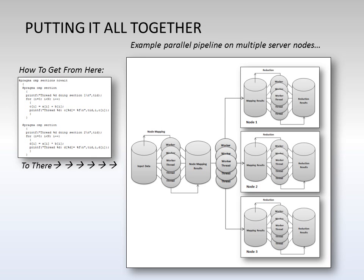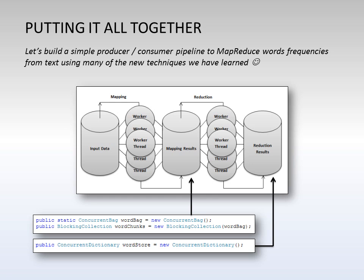One of the challenges with some of the lower level libraries is how to get from a simple example like dividing work between two loops in OpenMP to something like a giant pipeline process that has MapReduce spread across three different servers. The building blocks in C-Sharp for parallel programming provide a nice alternative to that. Since we only have a limited amount of time today, I thought I would take one of those MapReduce blocks and see if we could build a simple producer-consumer pipeline to MapReduce word frequencies from given chunks of text using many of the techniques we've talked about in this presentation.